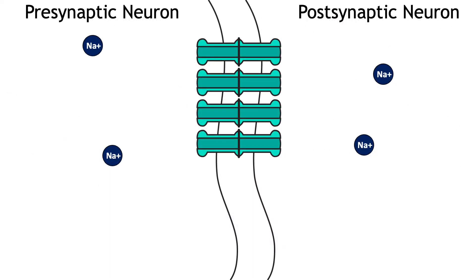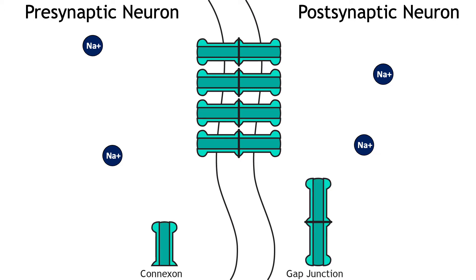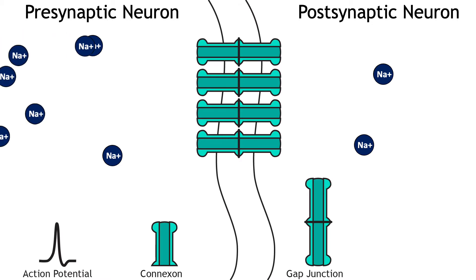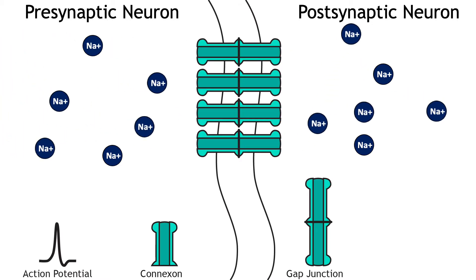There are two types of synapses: electrical and chemical. Electrical synapses are a direct connection between two neurons. Cell membrane proteins called connexons form gap junctions between the neurons. The gap junctions form pores that allow ions to flow between neurons, so as an action potential propagates in the presynaptic neuron, the influx of sodium can move directly into the postsynaptic neuron and depolarize the cell.